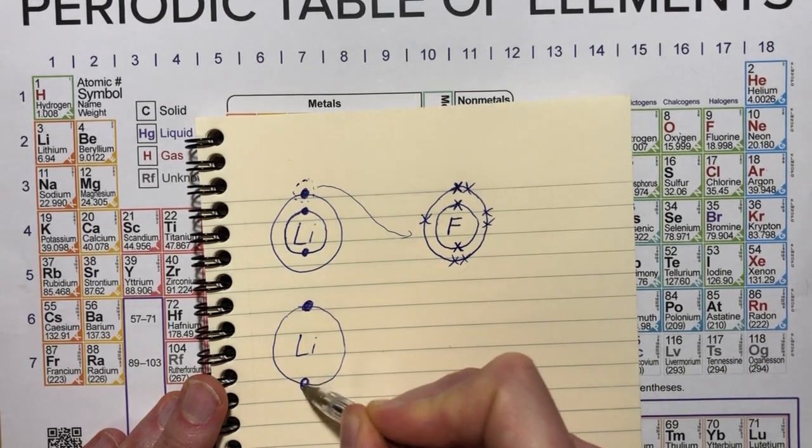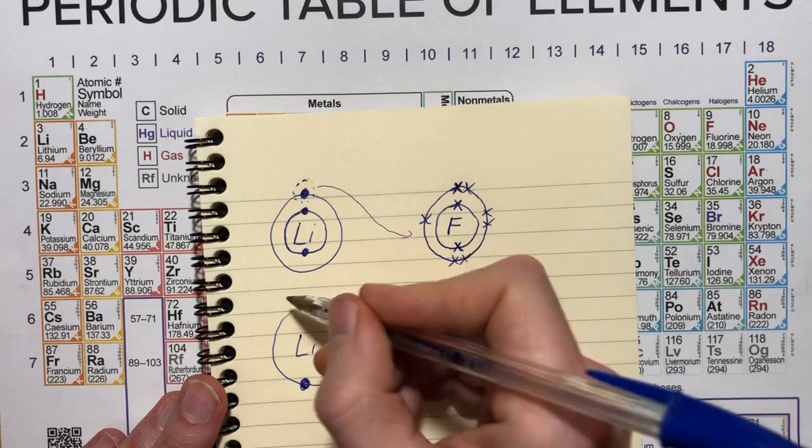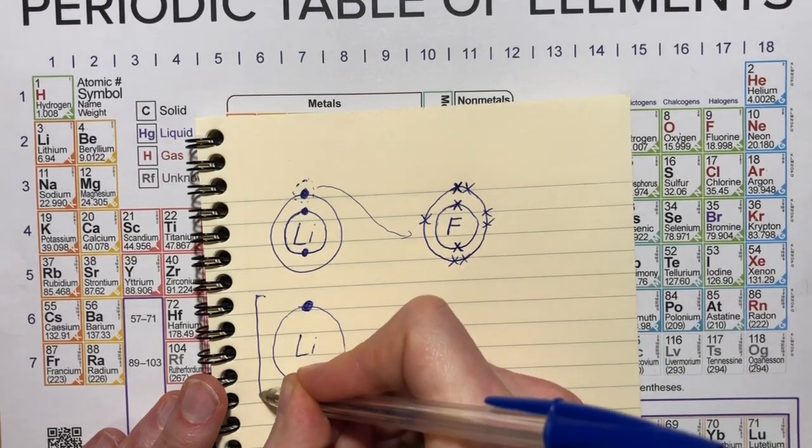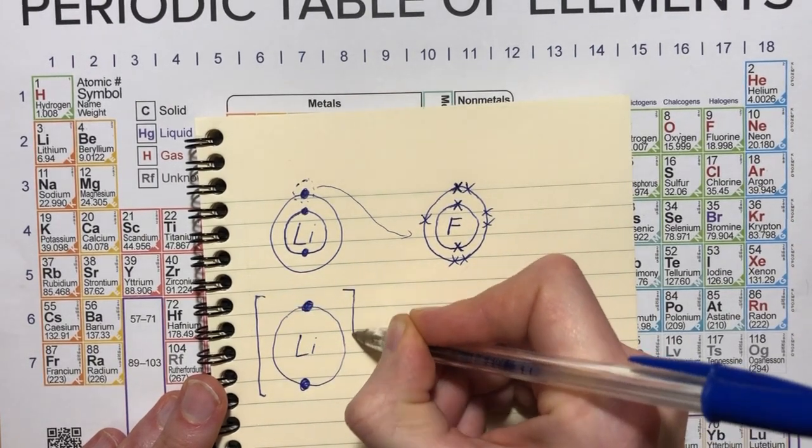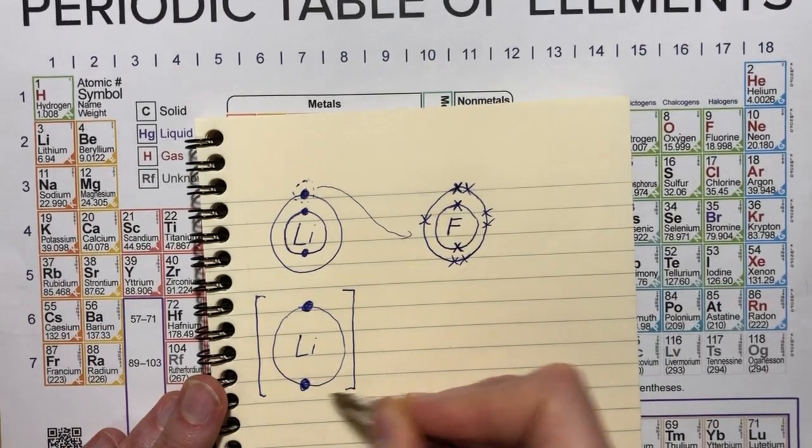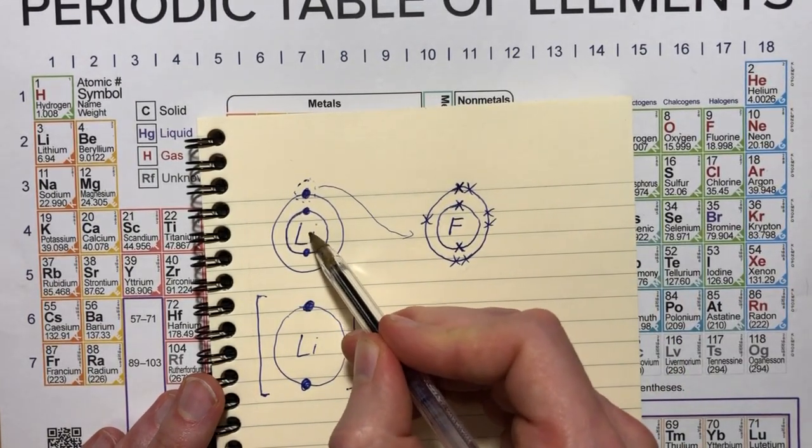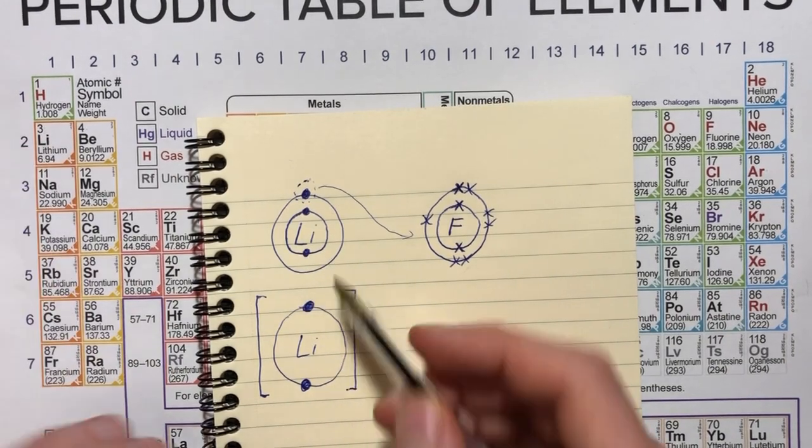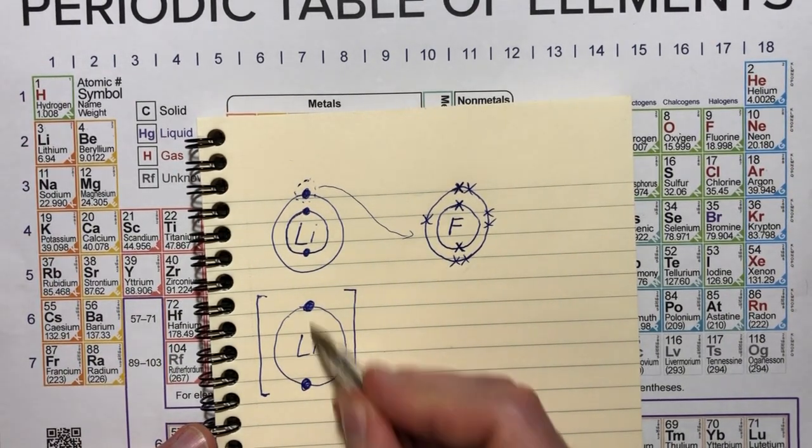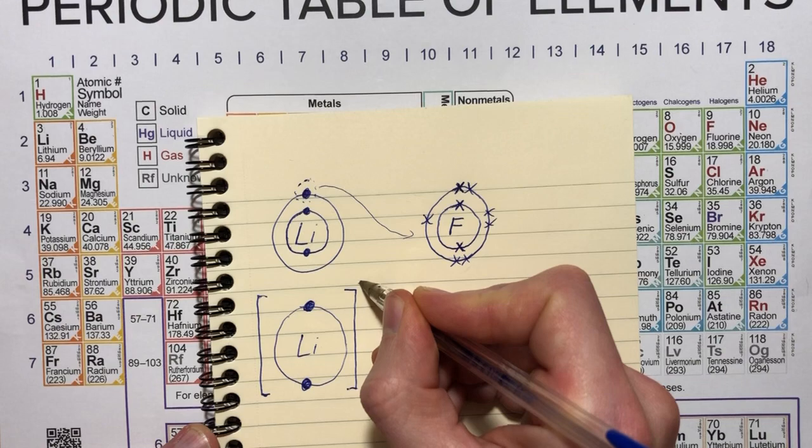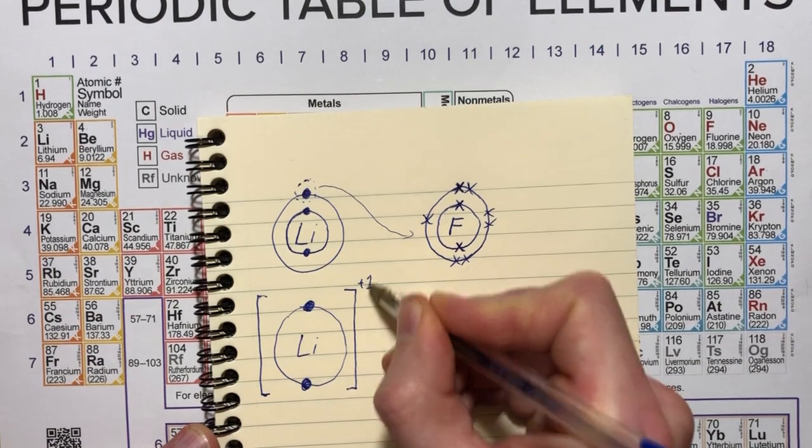So lithium becomes this. And because it's lost an electron, it's now charged. Remember, the electrons are negatively charged. So if you lose one, you become positive because lithium still has the same number of protons, three, in its nucleus, but it has only two electrons. So it becomes a plus one charge.